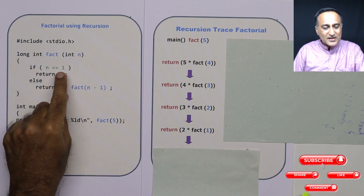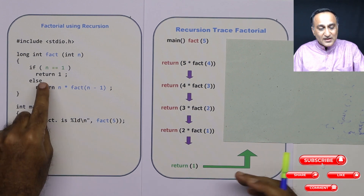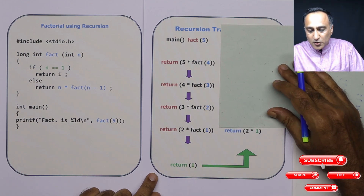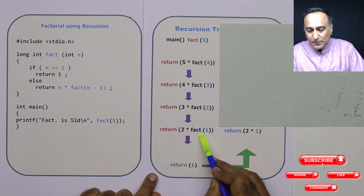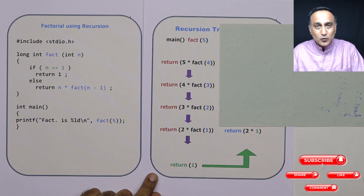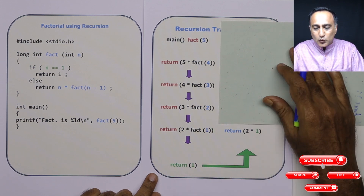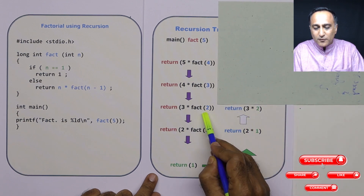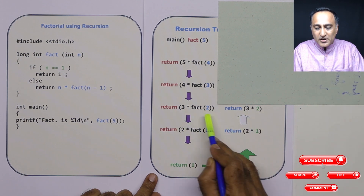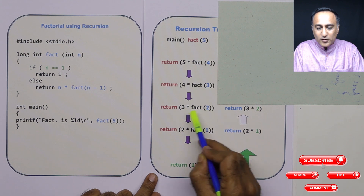Next time when fact is called with 1, n is 1. 1 is equal to 1 is true, so 1 is returned. Now since I am able to get the factorial of 1 as 1, I can replace that with 1. So factorial of 2 now happens to be 2. Since I know factorial of 2 is 2, I can replace that value. Factorial of 3 becomes 3 into 2 which is 6.